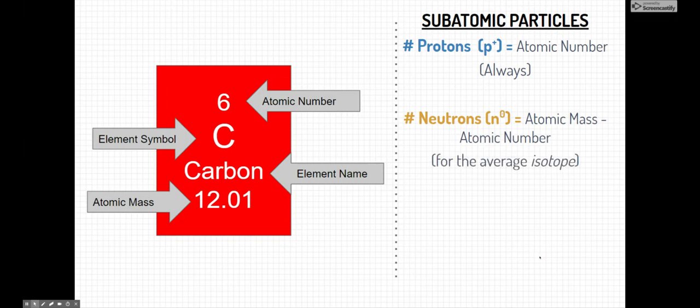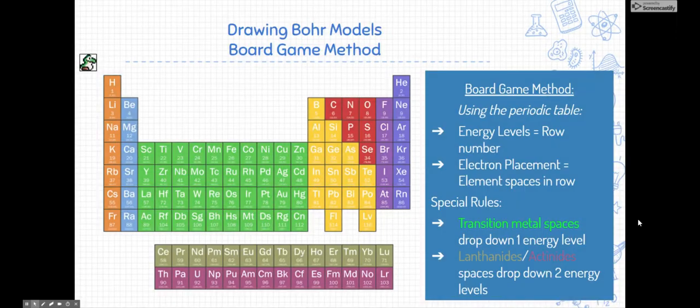Now, this is for the average isotope. Not all atoms weigh the same, but the average ones are the ones that are shown on the periodic table. How about the number of electrons? The number of electrons is equal to the number of protons typically, but that's only if the atom is neutrally charged, which is how we're going to treat them at the beginning of the semester.